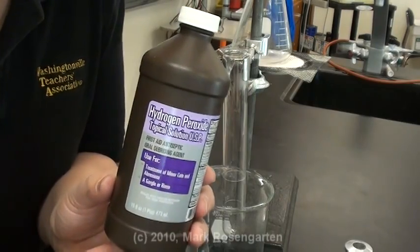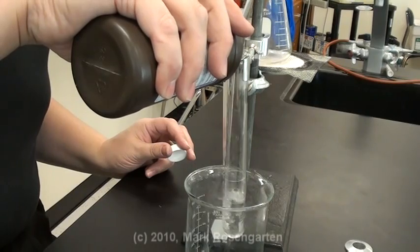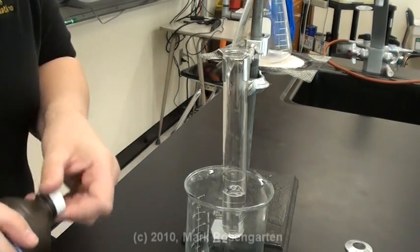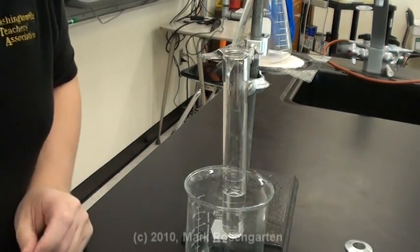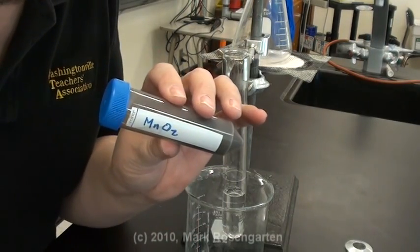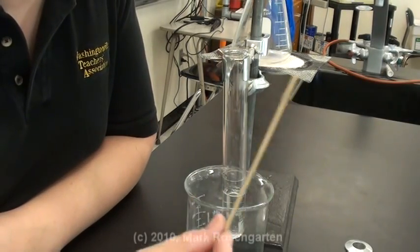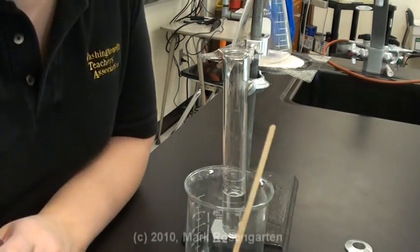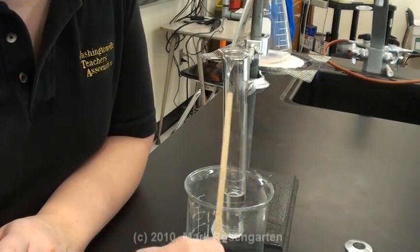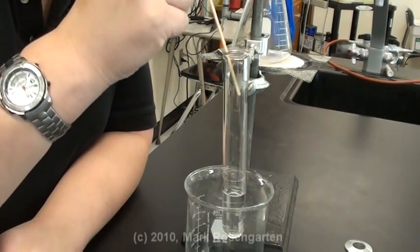Here's your hydrogen peroxide. We're going to decompose it by adding a catalyst. The catalyst we're going to use is manganese dioxide. We're going to test for the presence of oxygen gas by doing the glowing splint test. I'm going to take this wooden splint, light it on fire, blow it out, and then I'm going to take that glowing splint, put it in here.